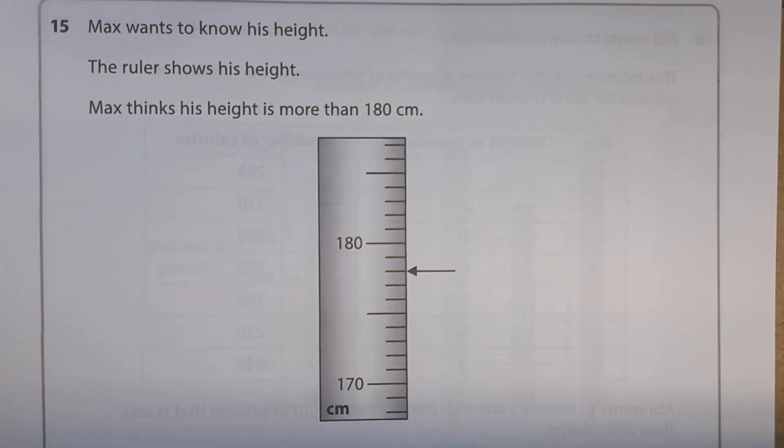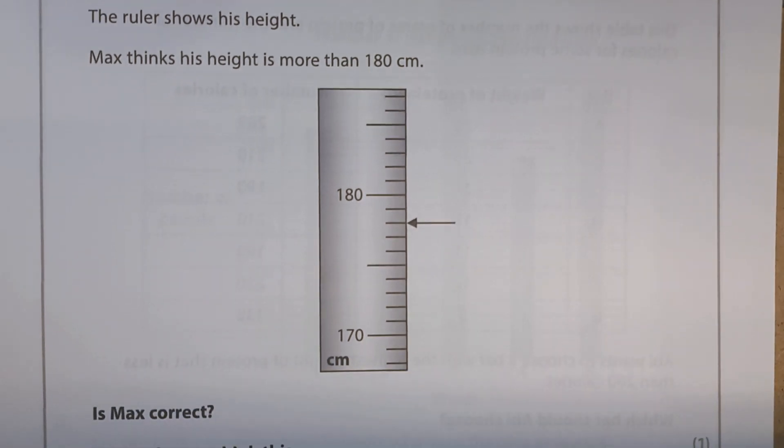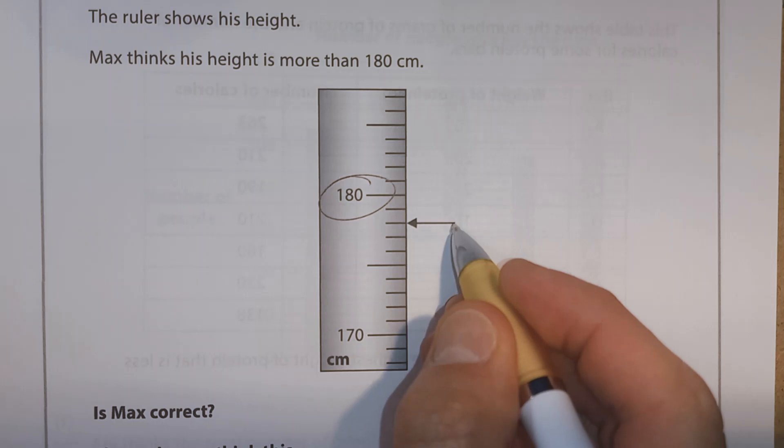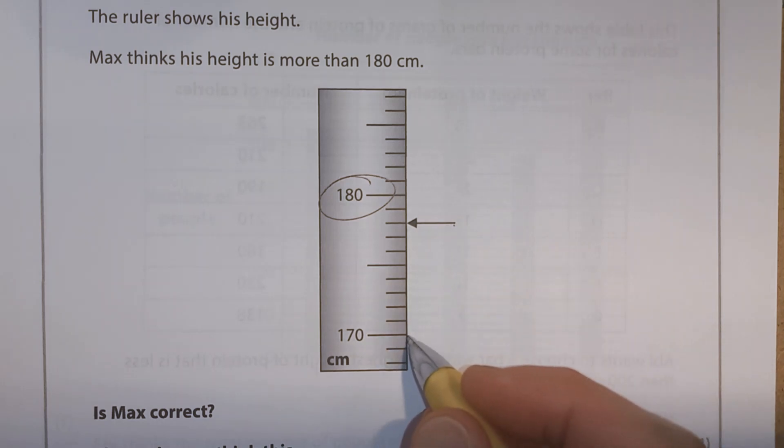Question 15. Max wants to know his height. The ruler shows his height. Max thinks his height is more than 180 centimetres. Is Max correct? Well, 180 is up here. He's below it.